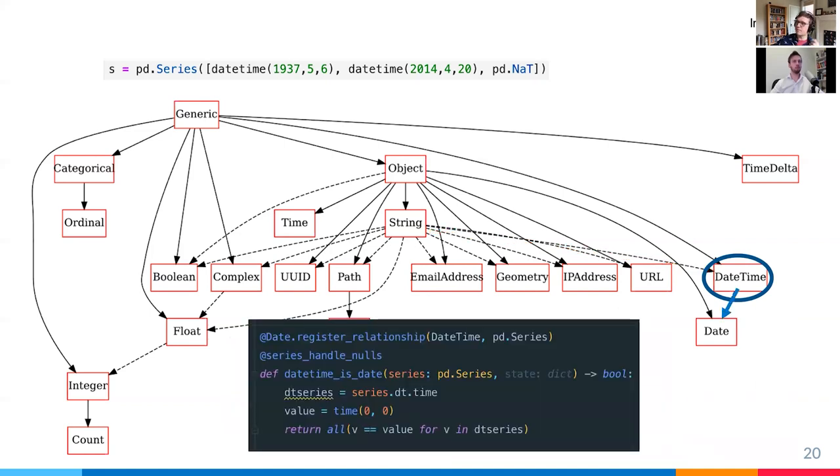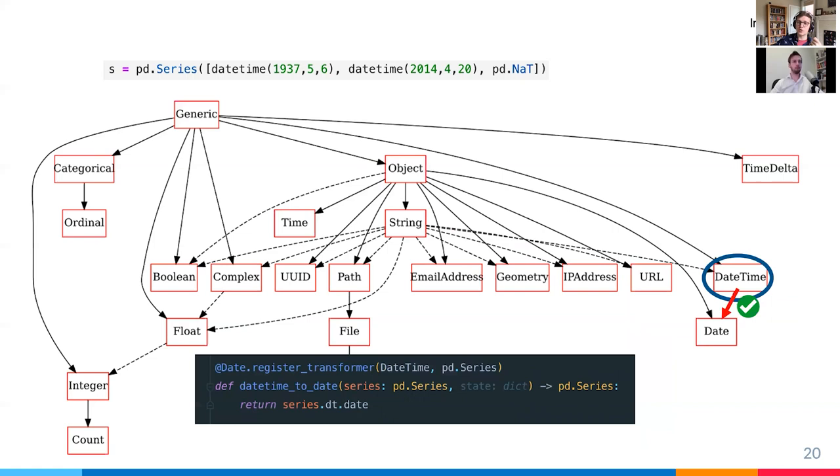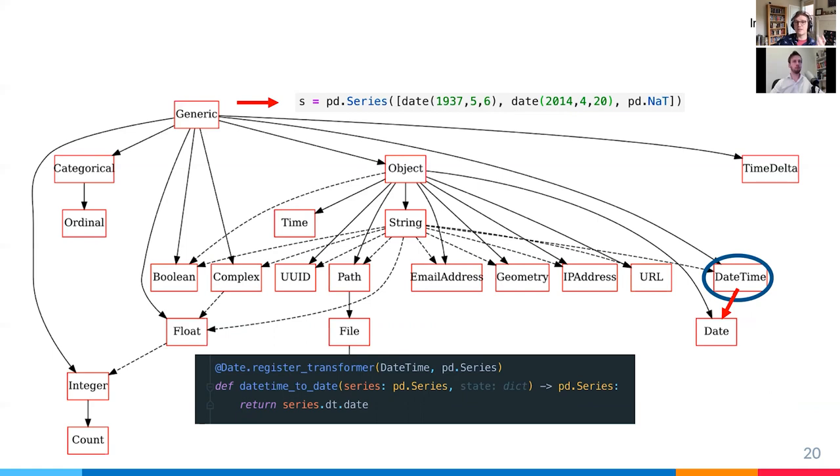There's one child left, and we basically perform the same process. We see that date is effectively a date time where the time values are zero, and that is the case in our example. So, we'll transform again, and we'll end up with our final type of date and our final series of dates with, in the first value, the year 1937, the month five, and the day six. So, I'll hand it back to Simon.